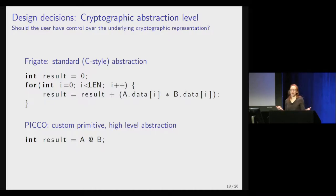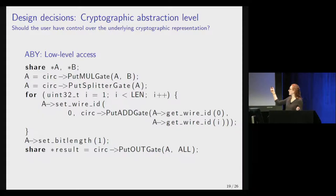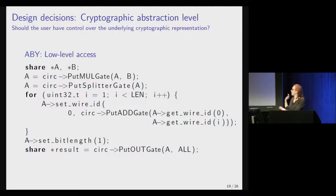But maybe you are a cryptographer implementing something more complicated than the inner product and you want fine-grained control over exactly what gates go into your circuit. In that case, you might want to use something like ABY, which is implemented as a library in C. You have your private share type, giving you super fine-grained control over the gates in your circuit. You put a multiplication gate down — this automatically supports parallelization using SIMD gates — you get a bunch of parallel multiplications, then split apart the arrays and add them up one at a time and output the result. This gives you a lot more control, but control can be dangerous, so you have to really know what you're doing.